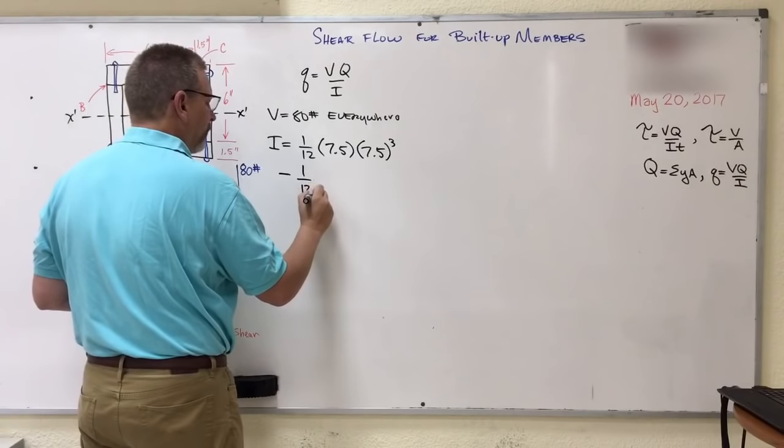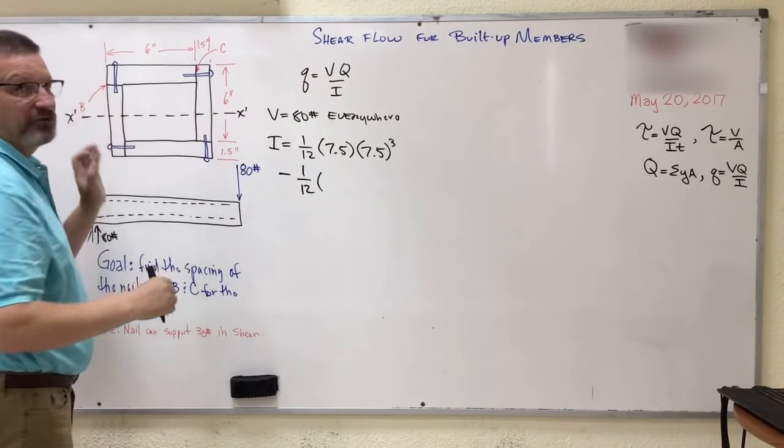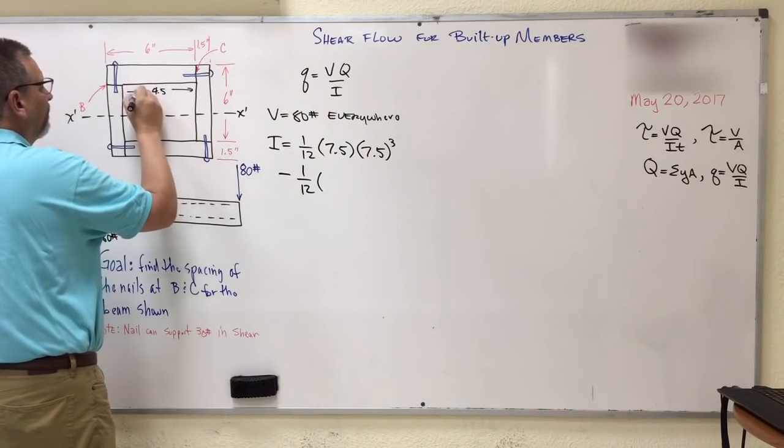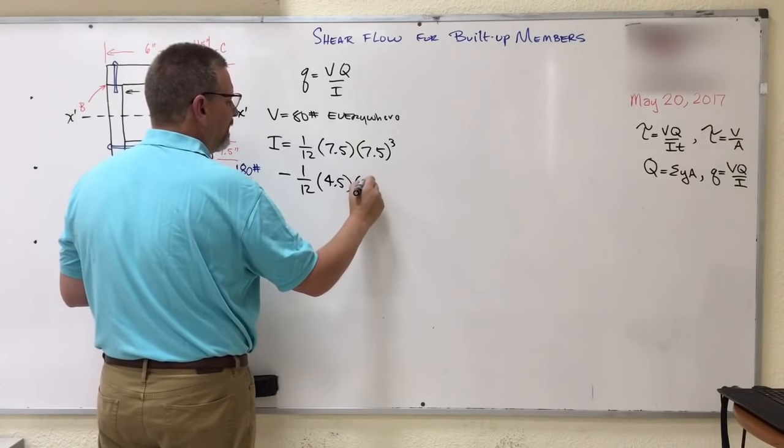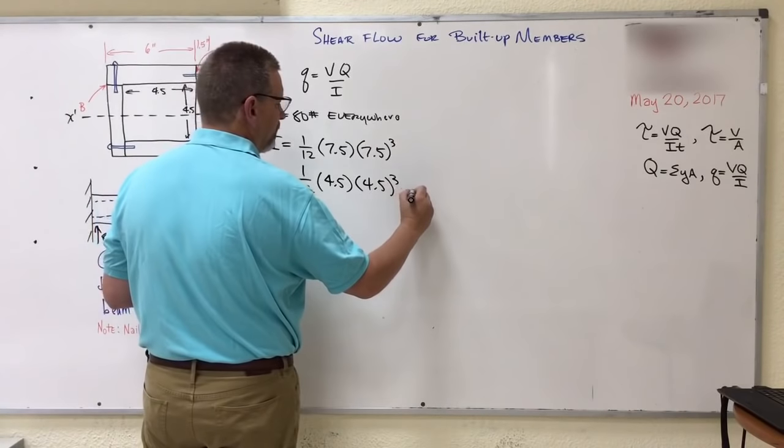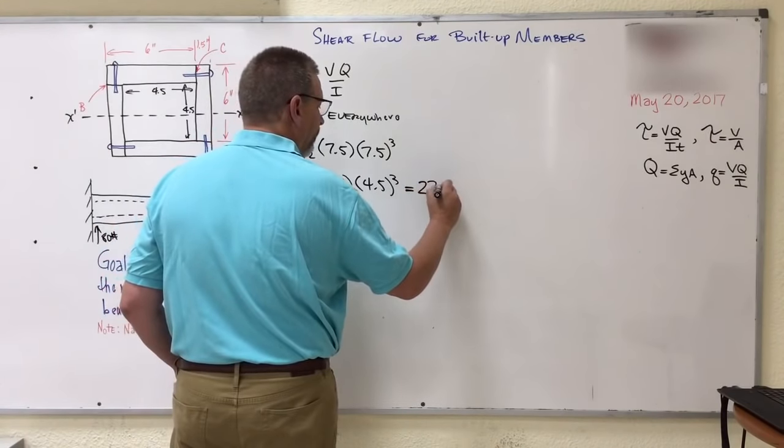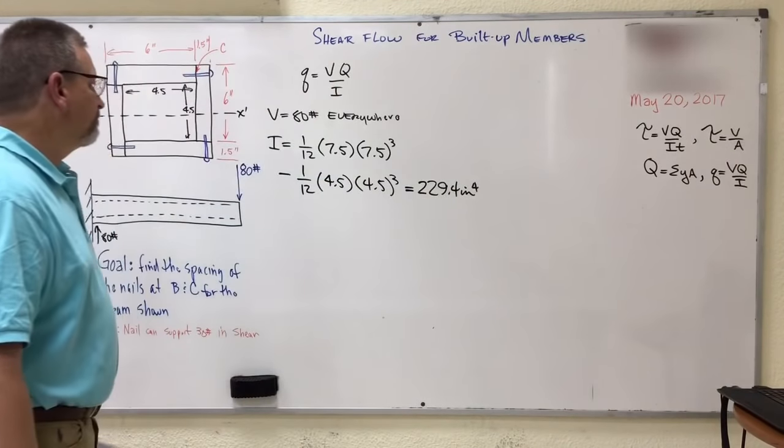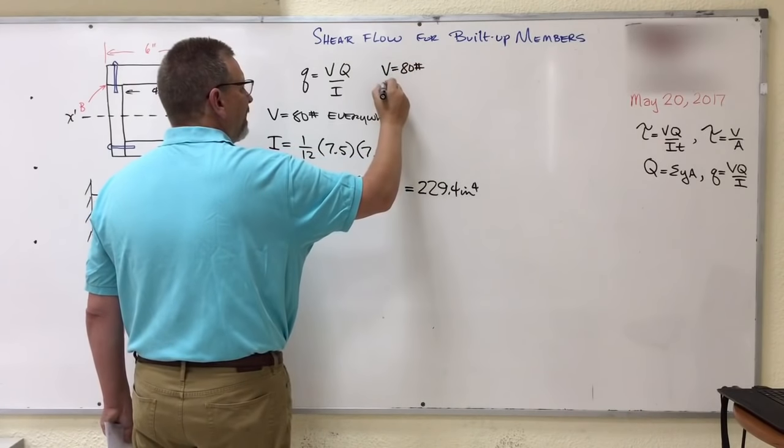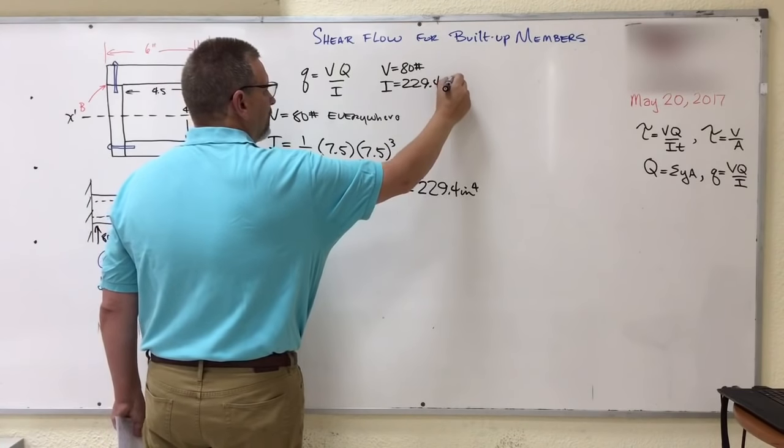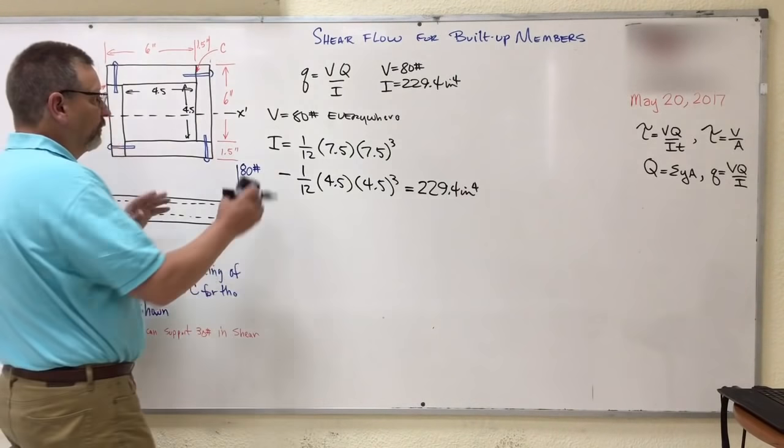Here comes the middle. The middle is what? If that's 7.5, and that's 1.5 and 1.5, so that's 3 off of 7.5, so that makes the middle 4.5. So 1/12th the base times the height, and that should do it. And let's see, I've already calculated this for us. I got I is equal to 229.4 inches to the 4th. So that's pretty good. Now we know two of these things for this equation. We know V is 80 pounds, and we know I is 229.4 inches to the 4th. And that, again, is everywhere. I is not going to be different for the C equation than it is for the B equation. So far, so good, right?